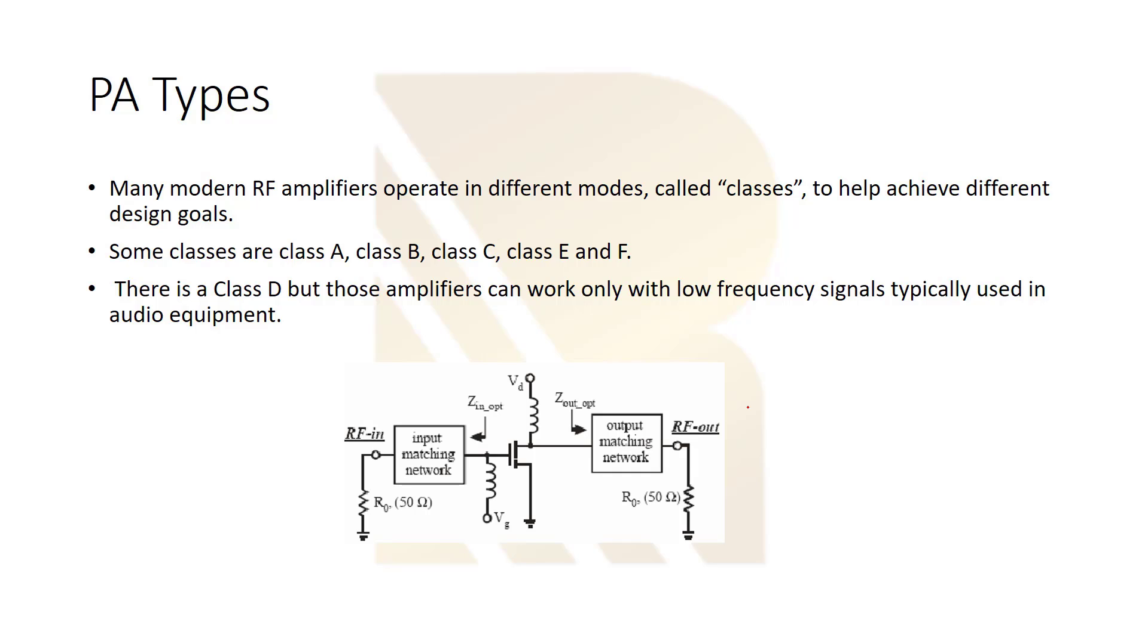Many modern RF amplifiers operate in different modes called classes to help achieve different design goals. So, we have different types of power amplifiers. And we can categorize them with classes A, B, C, E, F, and it can be D. And nowadays, like J even is a current, actually, it's a new power amplifier, which is designed. Among this, class D can work with only low frequency signals, typically used in audio equipment.